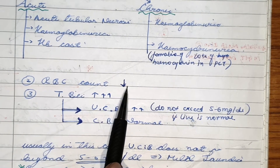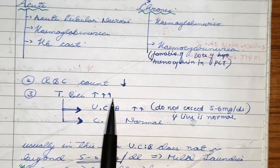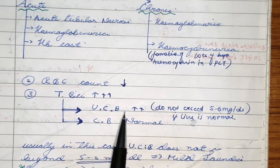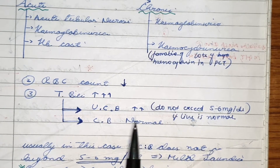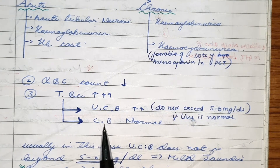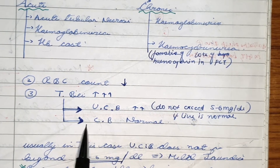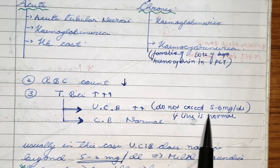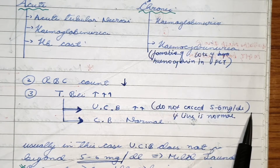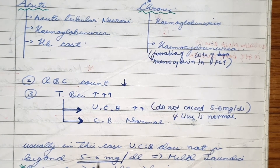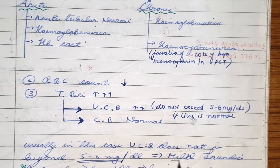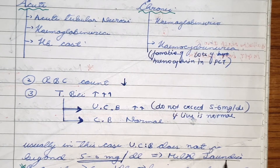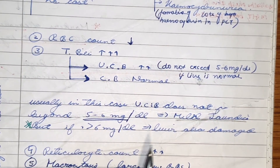Total bilirubin in blood increases. Unconjugated bilirubin is far more increased than conjugated bilirubin. Conjugated bilirubin actually remains normal because the enzymes present in the liver are working at maximal capacity. Unconjugated bilirubin increases a lot, but it usually does not exceed five to six milligrams per deciliter, resulting in mild jaundice.